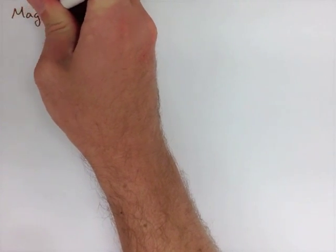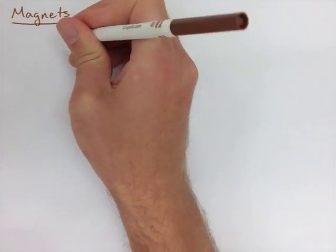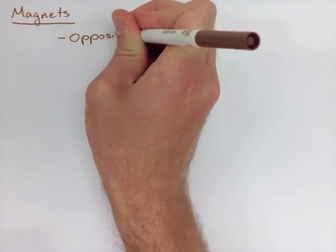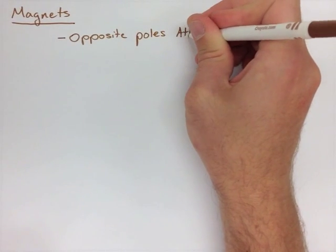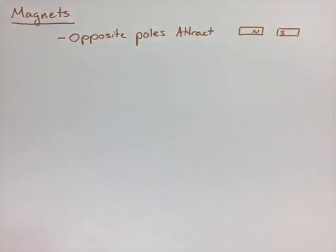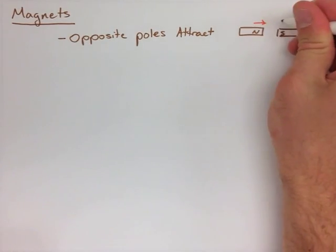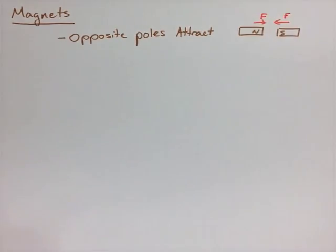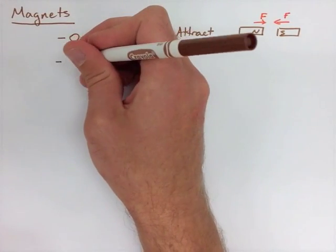When we first look at magnets, they're very similar to electric fields and electricity properties. We have opposite poles attract, so a north and a south pole will attract each other. We have similar poles repel, so a north and a north pole would then repel each other.